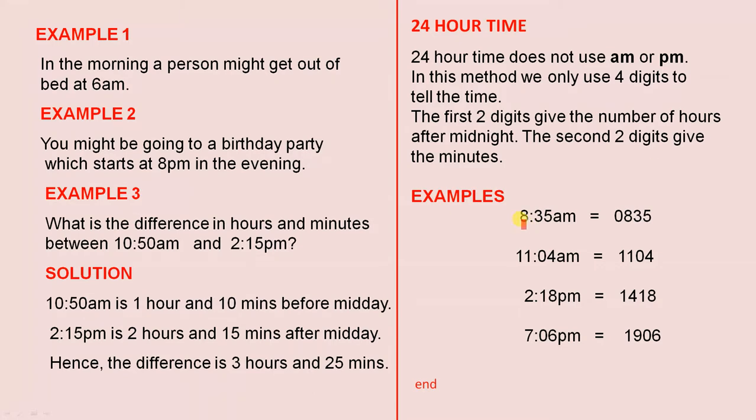Let's look at some examples. 8:35 AM is 0835. The 08 represents the hour and the 35 represents the minutes. 11:04 AM is 1104.